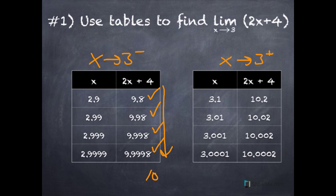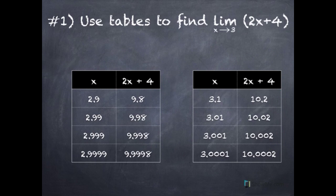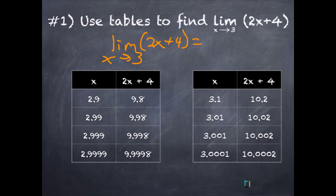Looking at the right-side table, we get y values 10.2, 10.02, 10.002, 10.0002 — these numbers are also approaching 10. So from both tables, we can see that this limit is approaching 10. Therefore, the limit as x approaches 3 of 2x + 4 equals 10, meaning as x gets closer to 3, y is getting closer to 10.